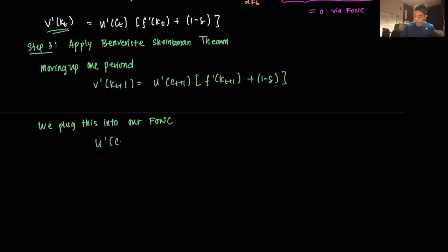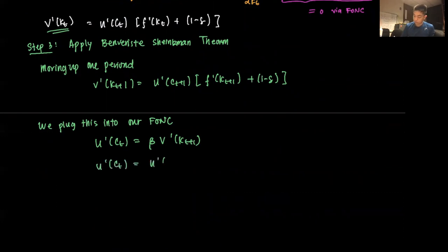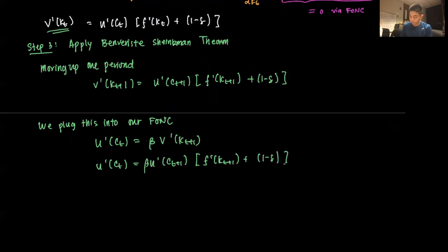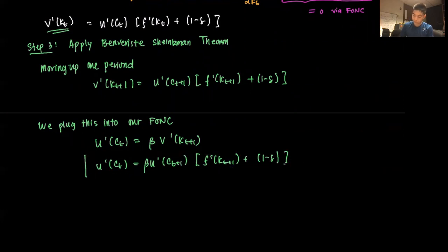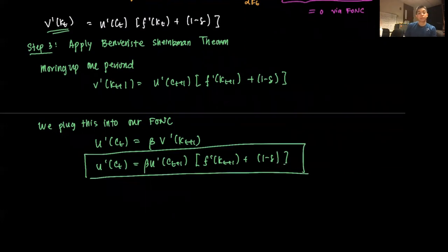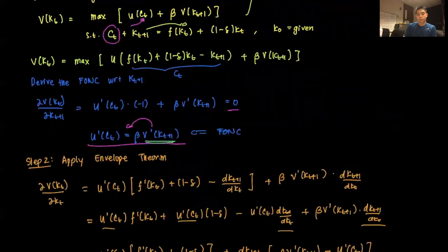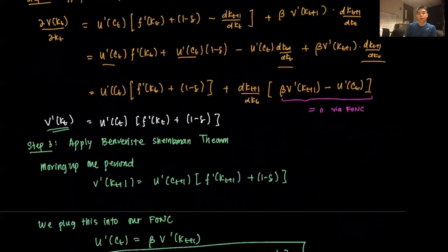Plugging V'(kt+1) into our FONC — u'(ct) equals beta·V'(kt+1) — we obtain the final derived equation: u'(ct) equals beta times u'(ct+1) times (f'(kt+1) + 1 minus delta). This is our first order necessary condition fully evaluated, showing how to derive the key conditions of this simple dynamic programming problem.